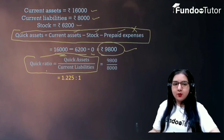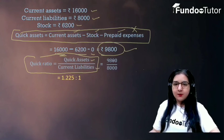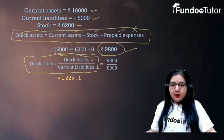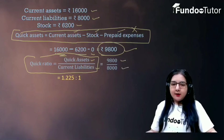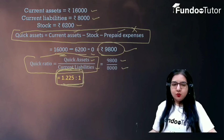Now we will apply the formula of quick ratio: quick ratio is equal to quick assets divided by current liabilities. So we get 9,800 divided by 8,000, which is 1.225 is to 1.